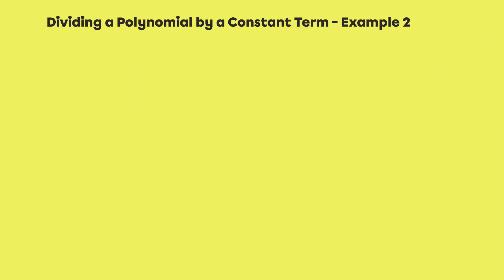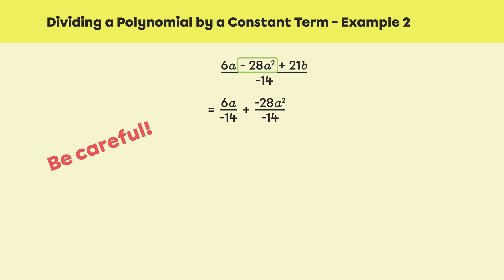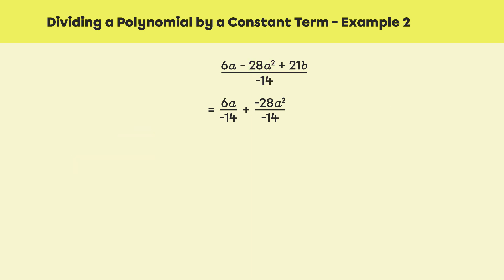Let's look at a final example of a polynomial divided by a constant term: 6a minus 28a² plus 21b, all divided by negative 14. We start by distributing the division to each term. Therefore, we have 6a divided by negative 14, plus negative 28a² divided by negative 14. Remember, subtracting a number is equivalent to adding its opposite, so it's easier to divide negative 28 by negative 14. Finally, the last term is 21b divided by negative 14.